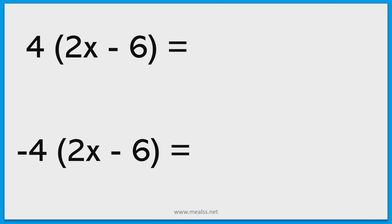What if the sign inside the bracket is negative? Well 4 times by 2x is still going to give us 8x and 4 times by what now becomes negative 6 is going to give us negative 24.